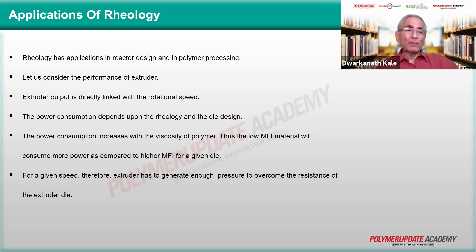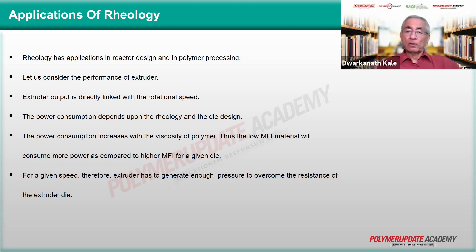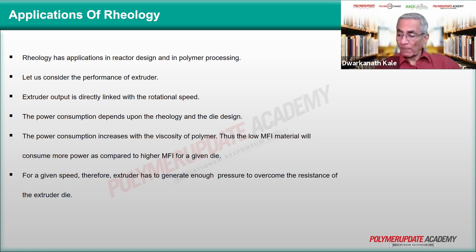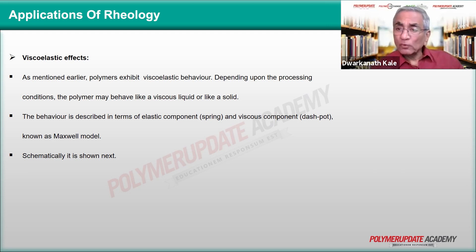For a given speed, low MFI material will consume more power compared to high MFI material because the viscosities are different. The extruder has to generate enough pressure to overcome all the resistance of the extruder die. Now let us look at viscoelastic effects — in an extruder, if you want to mix two polymers, how does viscoelasticity play its role?